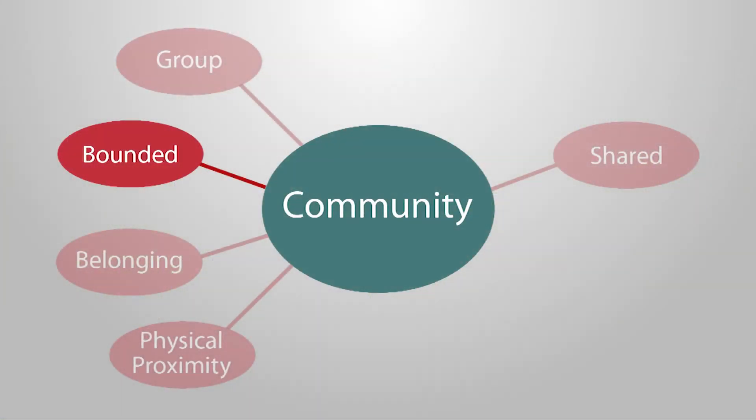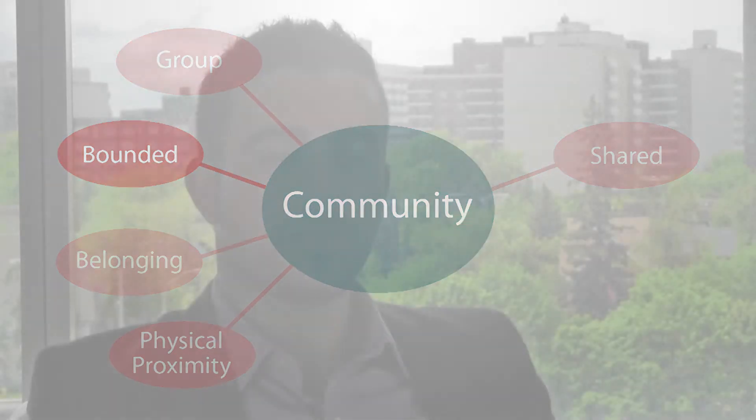The fifth common theme was bounded. It defines community by who is excluded as much as by who is included. For example, Christians and Muslims are part of two communities where each one is bounded by its own faith. However, Christians and Muslims can belong to the same community in a different context, for example as neighbors.